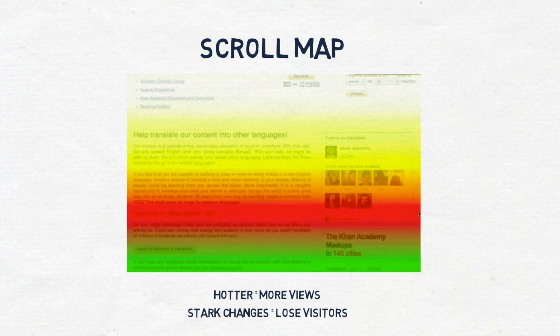This example from Crazy Egg shows Khan Academy's website. They state: when you analyze your scroll maps, look for call to actions that are hidden within the darker sections of your pages. The call to action is near the bottom of the screenshot in the green section, which means only half the visitors scrolled down that far and saw the button.